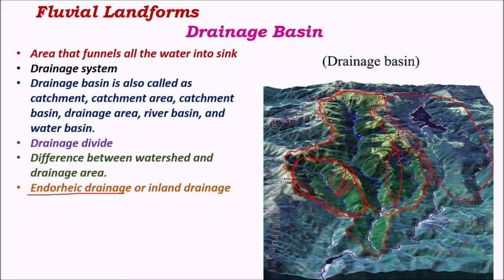A drainage system where the sink is an inland lake or inland body of water is called endorheic drainage or inland drainage — here water doesn't flow into the sea but ends up in a lake or inland river. For example, some rivers end up in the Dead Sea and various other salty lakes. Drainage pattern refers to the arrangement of tributaries and the main trunk river — the angles tributaries make with the main trunk during convergence and the overall shape of the rivers.